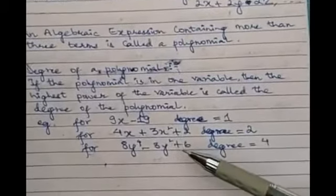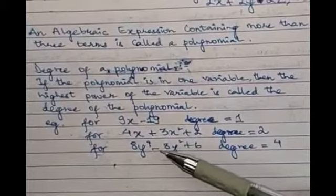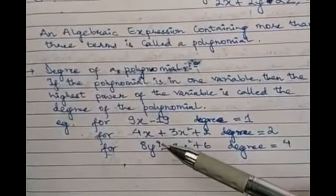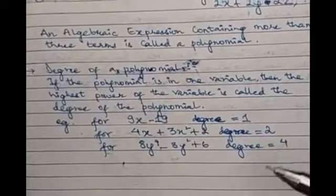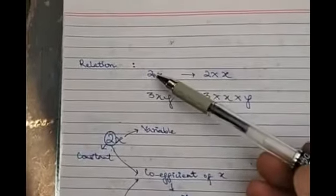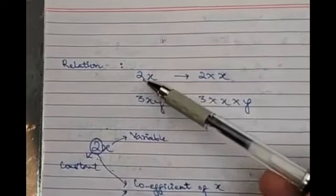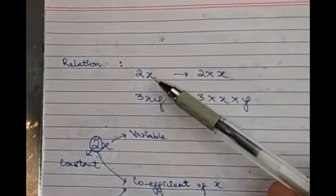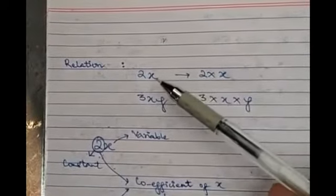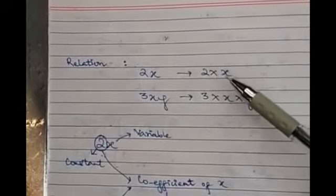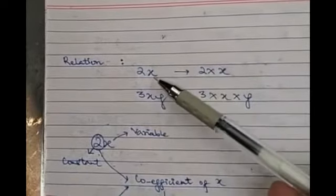For the third example, we have a trinomial in terms of y, where the highest power of y is 4, so its degree is 4. Also remember: when a constant and a variable are written together, the relation between them is always multiplication. For example, 2x means 2 times x, but we simply write 2x.